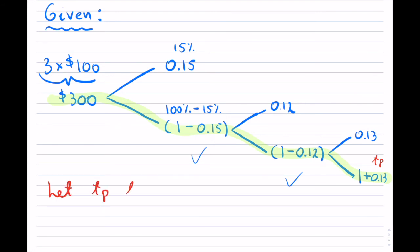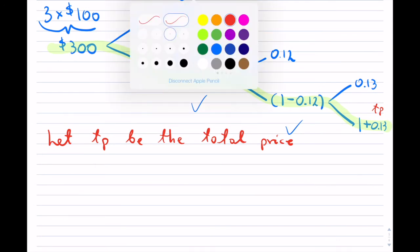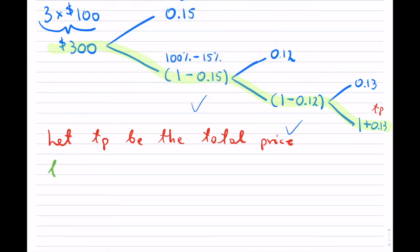Let TP be the total price. Writing it out, as I said, it's going to be really nice and easy. I start from the back. Basically, 1 plus 0.13.